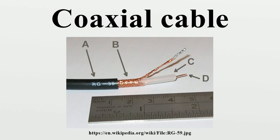Coaxial lines can therefore be bent and moderately twisted without negative effects, and they can be strapped to conductive supports without inducing unwanted currents in them. In radio frequency applications up to a few gigahertz, the wave propagates primarily in the transverse electric magnetic mode, which means that the electric and magnetic fields are both perpendicular to the direction of propagation. However, above a certain cut-off frequency, transverse electric or transverse magnetic modes can also propagate, as they do in a waveguide. It is usually undesirable to transmit signals above the cut-off frequency, since it may cause multiple modes with different phase velocities to propagate, interfering with each other.